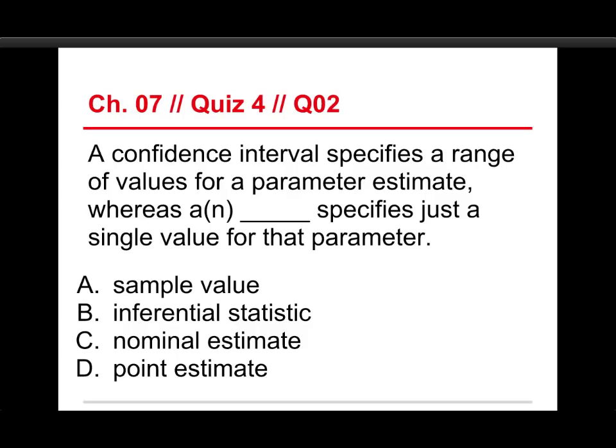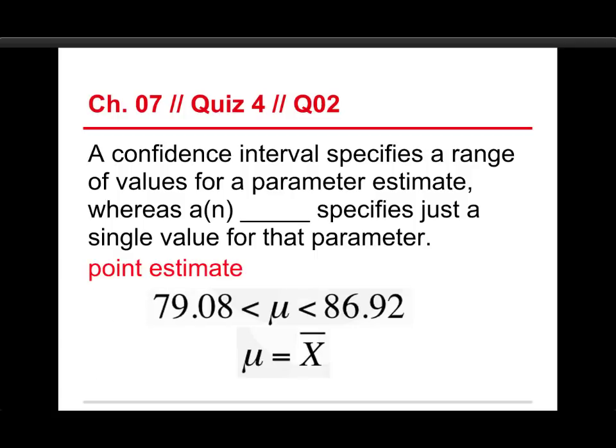Number two. A confidence interval specifies a range of values for a parameter estimate, whereas a blank specifies just a single value for that parameter. The choices are a sample value, an inferential statistic, a nominal estimate, or a point estimate. The answer is a point estimate. That gives just a single number. A nominal estimate is just nonsense they made up. Take a look here. What we have on the top is a confidence interval, where we have a low end and a high end to the interval. So that's two numbers. And beneath it is the point estimate. It's just a single number. Take the sample mean, and that is the point estimate for the population mean.